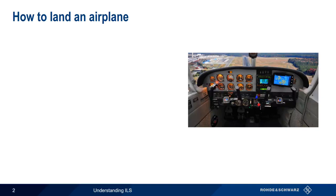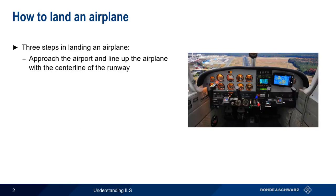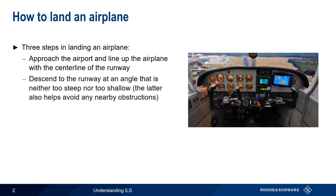In order to understand ILS, it might be helpful to start with a brief description of how to land a plane. There are three main steps involved in landing an airplane. First, we need to approach the airport and eventually line up the airplane with the centerline of the runway. Next, we need to descend towards the runway at an angle that's neither too steep nor too shallow. The latter is important in avoiding any nearby obstructions, such as trees.